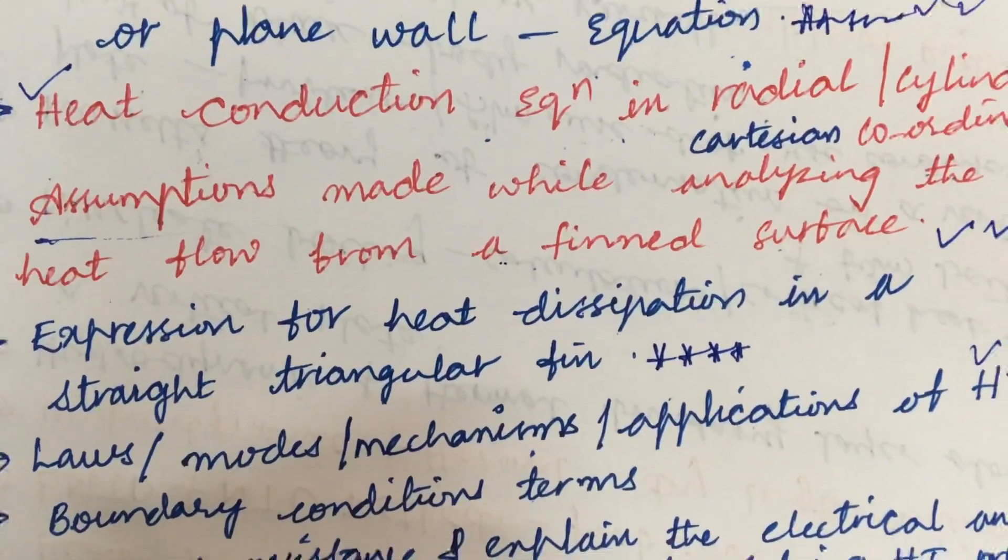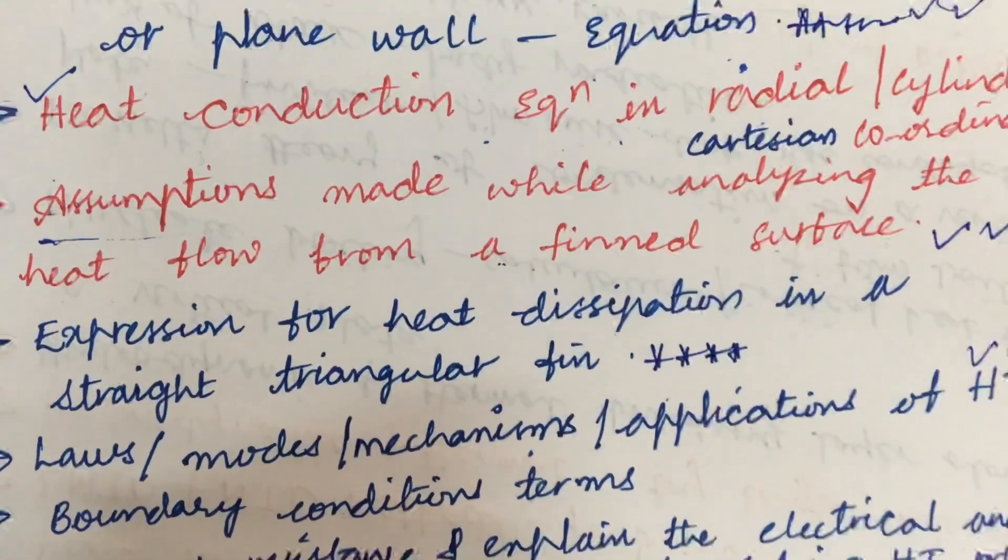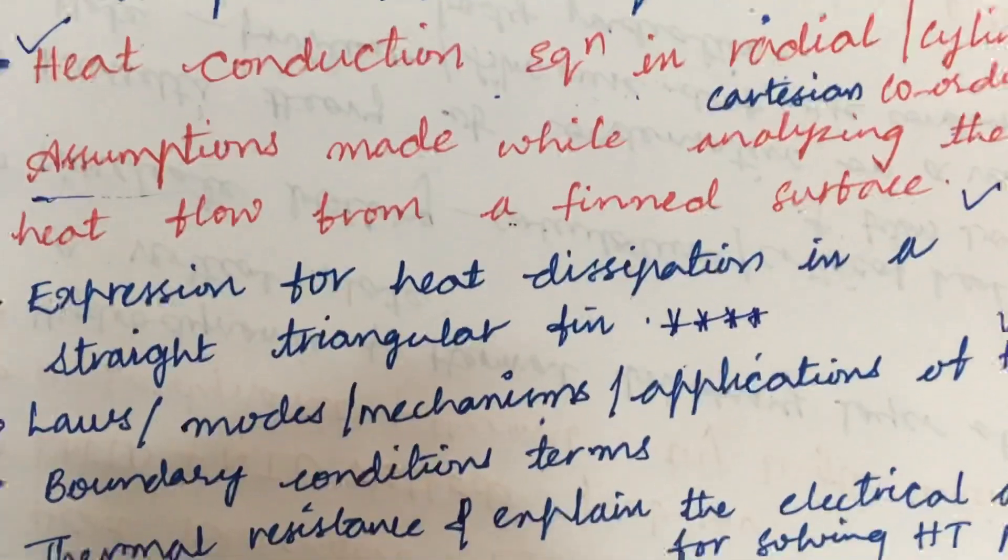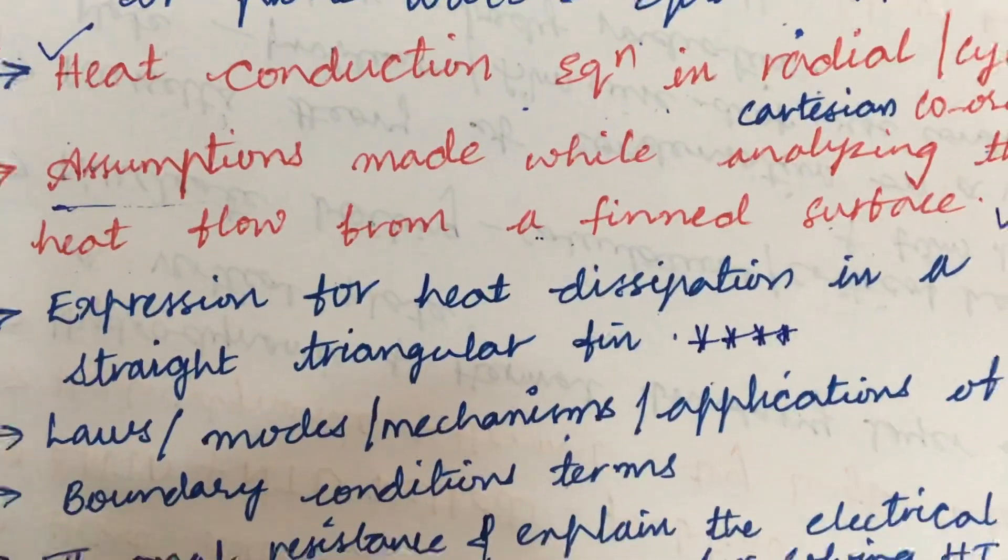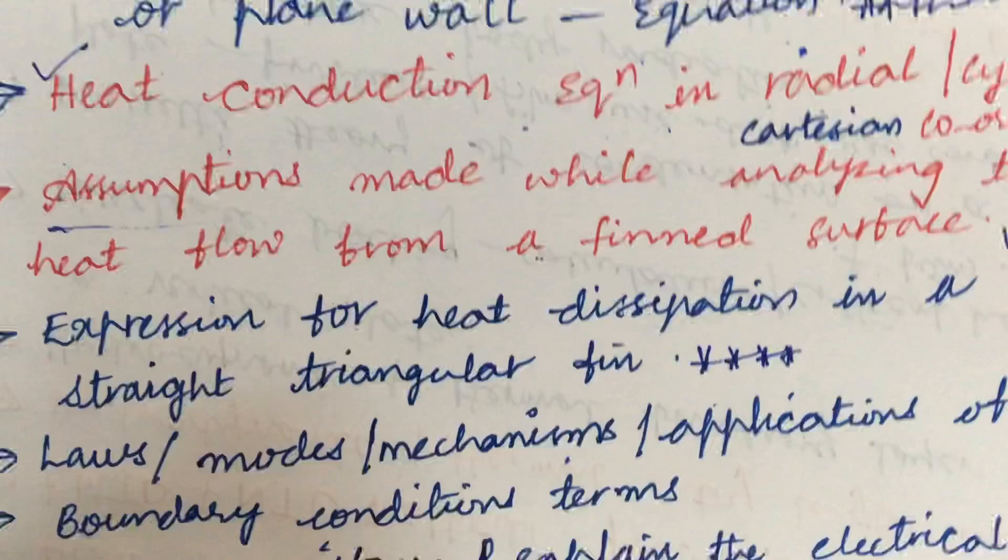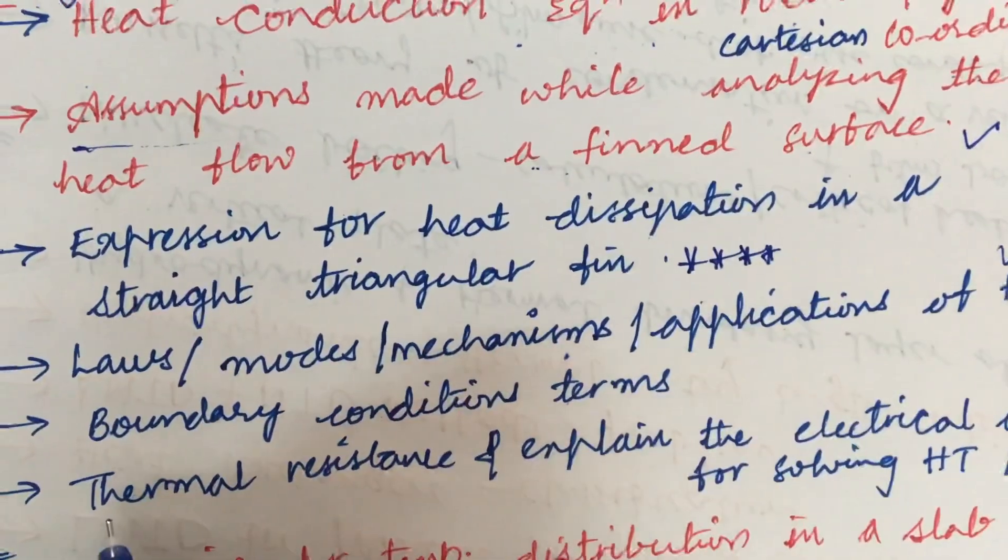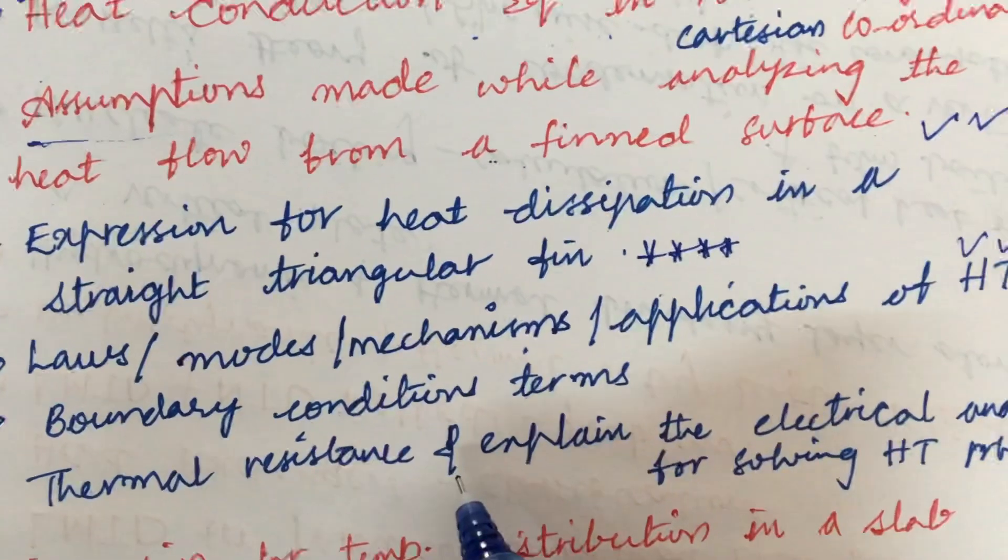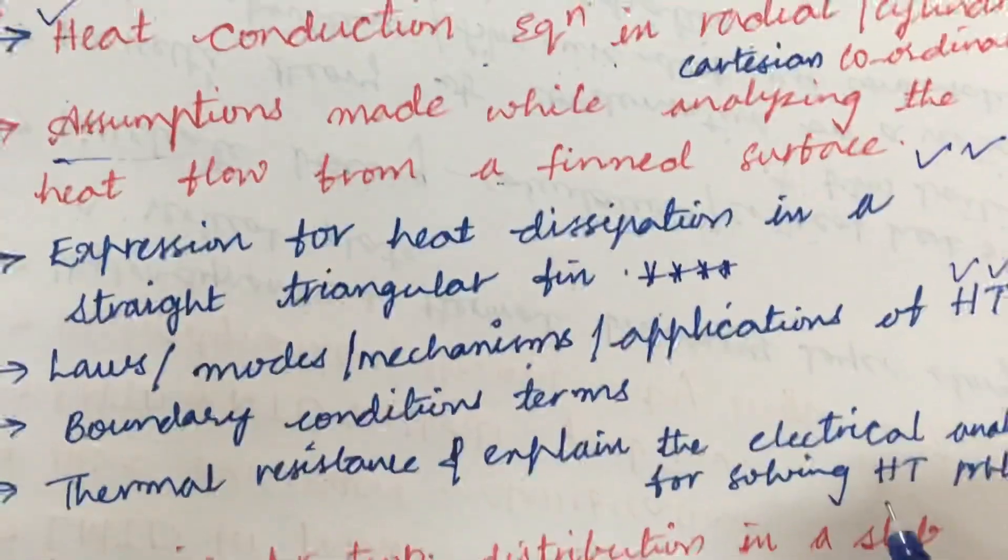Do not expect a theory question. You will be followed by a problem for sure, A and B combination. Or sometimes if the problem is too lengthy, they may be asking directly for 15 marks. Later, the boundary condition and its terms as well as the thermal resistance, explain the term and explain the critical analog for solving the heat transfer problems.